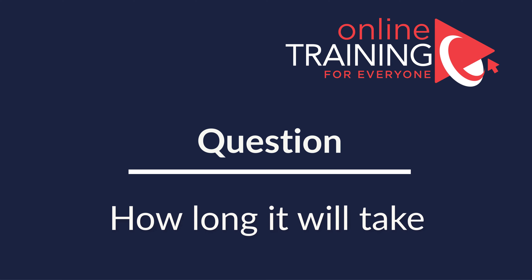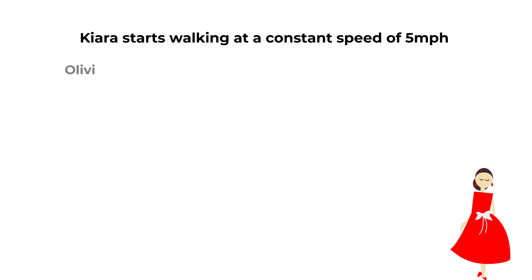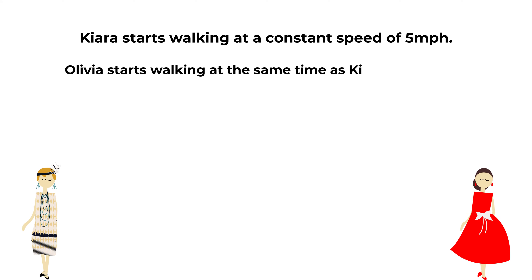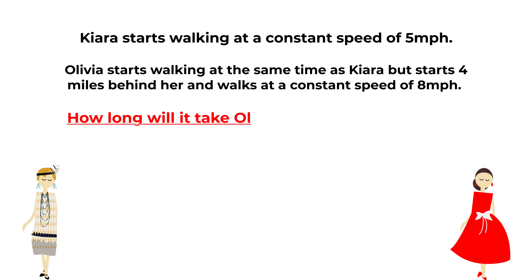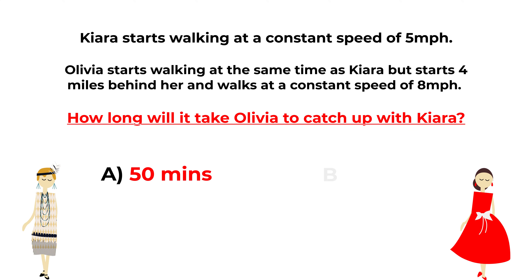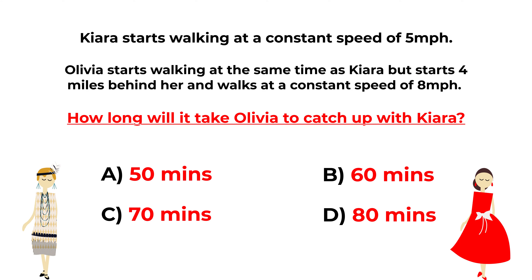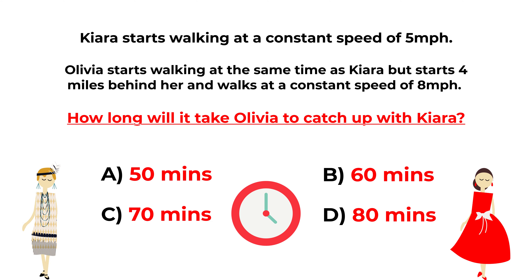Here's an interesting question. Kiara walks at a constant speed of 5 miles per hour. Olivia starts walking at the same time as Kiara but starts 4 miles behind her and walks at a constant speed of 8 miles per hour. How long will it take for Olivia to catch up with Kiara? Choices: A is 50 minutes, B is 60 minutes, C is 70 minutes, D is 80 minutes.